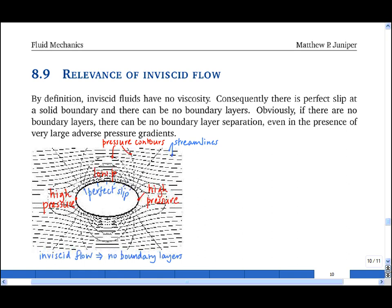So around the back of the object, this flow is totally unrealistic. In a real flow, that is to say a viscous flow, around an ellipse, boundary layers will form along the surface.